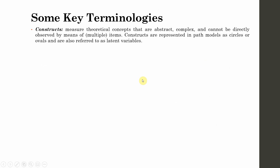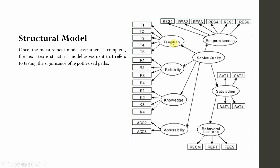Now let's look at the key terminologies when you are using SEM or SEM using AMOS. Constructs are measures of theoretical concepts that are abstract, complex, and cannot be measured directly in observable terms, so they are measured using multiple items. Constructs are represented in path models as circles or ovals and are also referred to as latent variables. Examples include tangibility, reliability, knowledge, accessibility, service quality, responsiveness, satisfaction, and behavioral intention.